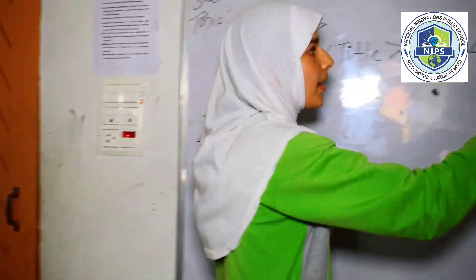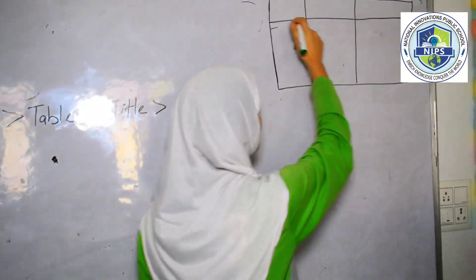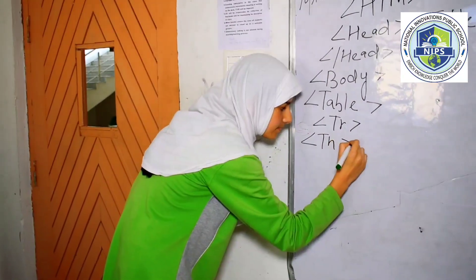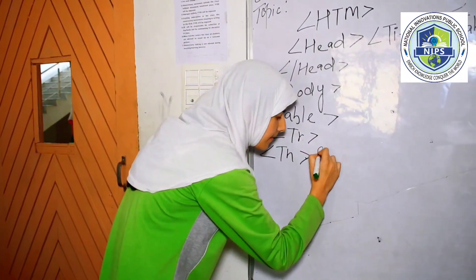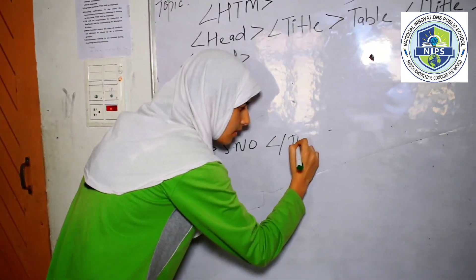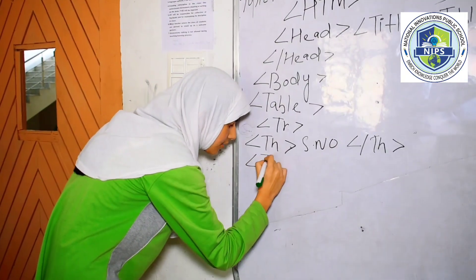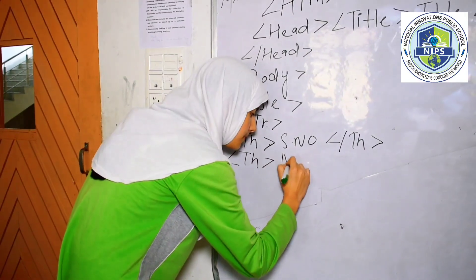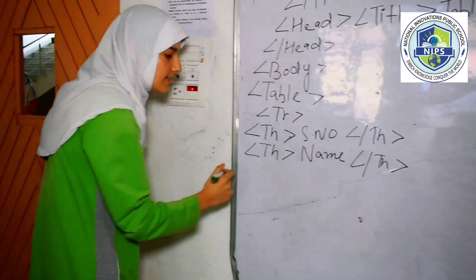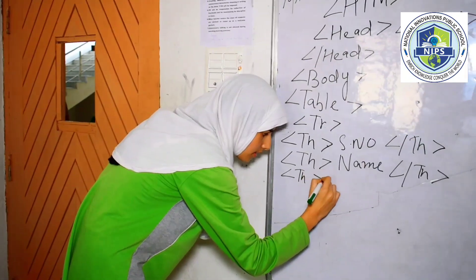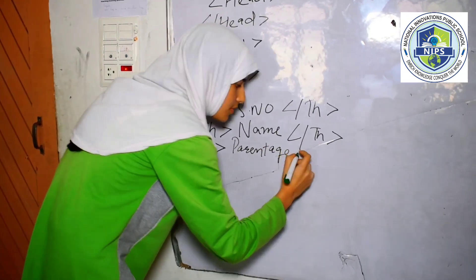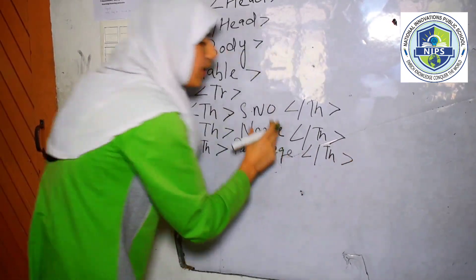Now, for the table row header, we can see that the table row has table headers. So we can give table header — for example, serial number — and then we will close the table header. Then we will write 'name', then close the table header. Then we will write 'parentage', then close the table row.